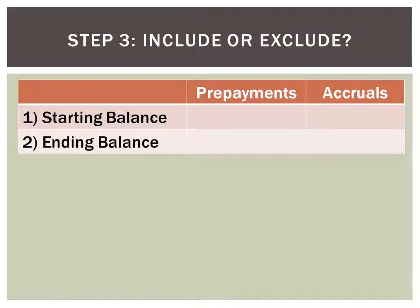Step three — the most important step — is include or exclude. We have four items: starting balance, ending balance, cash/bank, and the P&L figure. Let's talk about the ending balance for prepayments first. At the end of the year, if you prepaid expenses for next year, that prepayment is not for this year — the expenses have not been used up yet — so you must exclude it.